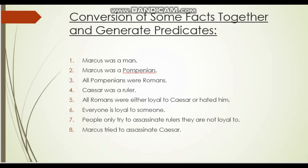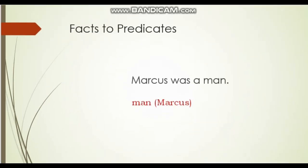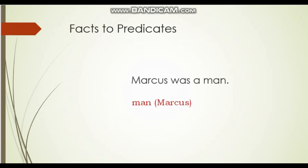We now convert a set of facts into predicates. Fact 1: 'Marcus was a man' → man(Marcus), since Marcus is the name. Fact 2: 'Marcus was a Pompinian' → Pompinian(Marcus). Just as you can be Indian as well as Bengali, Marcus was both a Pompinian and a Romanian.